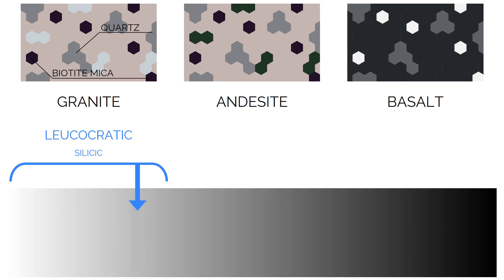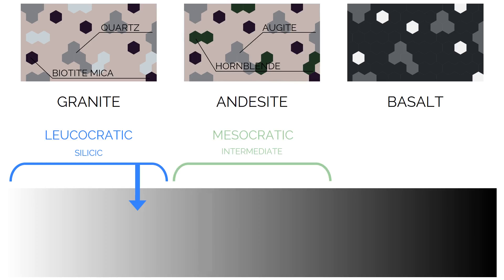Intermediate is the next group. Rocks in this group contain between 52 and 66% silica. The most common rock in this group is andesite, a fine-grained volcanic rock. Also common at convergent plate boundaries and named after the Andes, the magma solidifies at a higher temperature than silicic magmas. Intermediate rocks contain similar minerals to the silicic rocks, but they have little or no quartz. Instead, they contain mafic minerals like hornblende and augite. These minerals give them a mesocratic aspect.